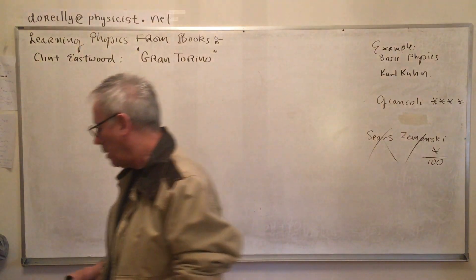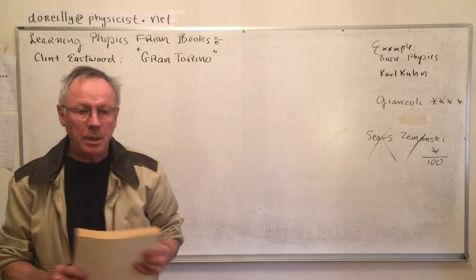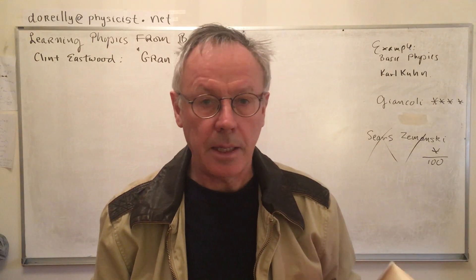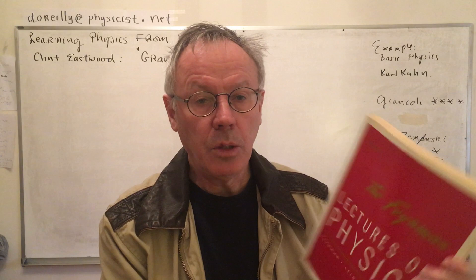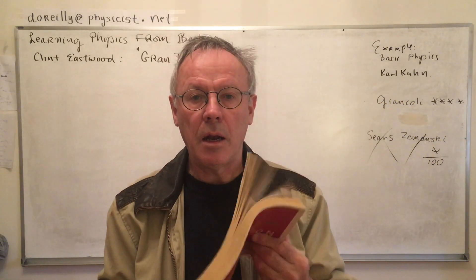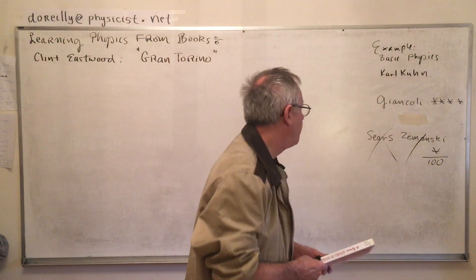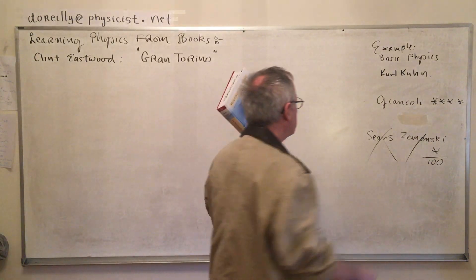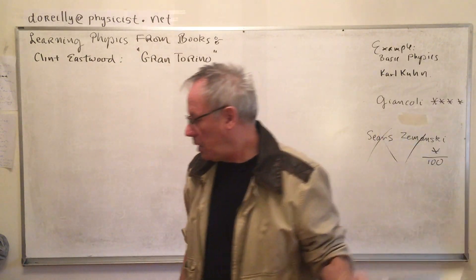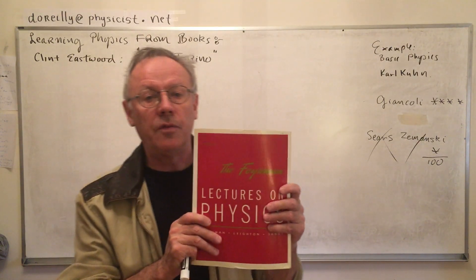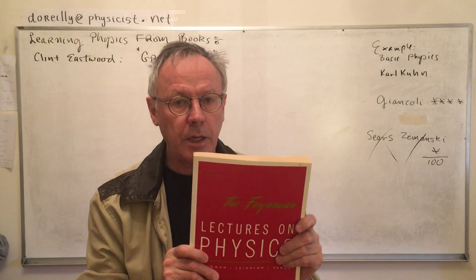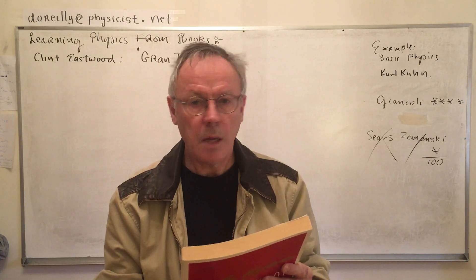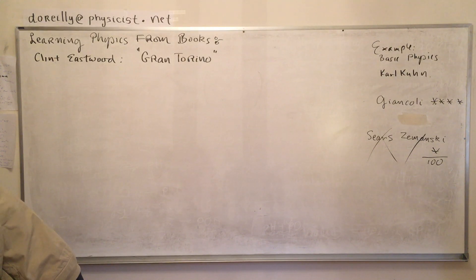The Feynman Lectures cover everything — one volume has a lot of electromagnetism, another is all quantum mechanics. Volume one for general physics is all you need. This is a reference: you cannot really learn well out of the Feynman Lectures. You might learn your physics out of Sarway and Jewett, or Basic Physics by Carl Kuhn, and use Feynman only to enhance what you've learned, because Feynman gives you in-depth insights but does not make it easy.